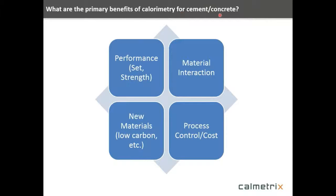The primary benefits of calorimetry for cement and concrete break down into four areas. One is performance, including set times and strength. Material interaction is a big area — concrete is a complex mixture and how materials interact is very important; this is a fast way to assess whether materials interact appropriately. There is also emphasis on new materials and cement replacements to lower the carbon footprint. And finally, process control and cost control, including quality control and controlling the process.